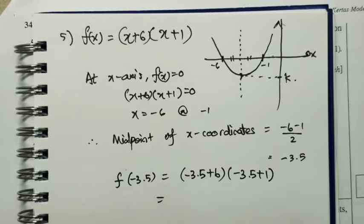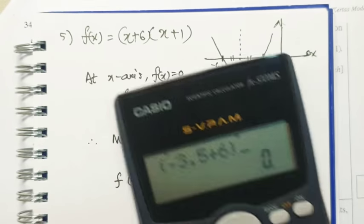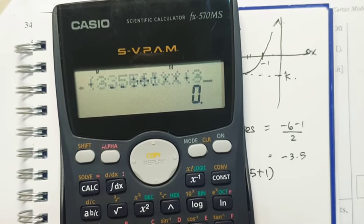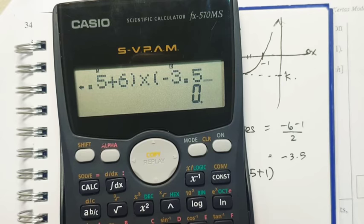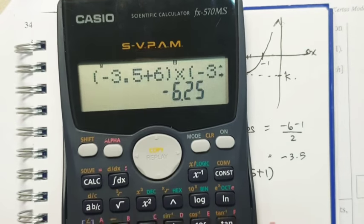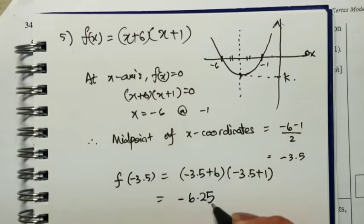So with this, we use the calculator. Negative 3.5 plus 6 times negative 3.5 plus 1. So we will have negative 6.25 as our answer.